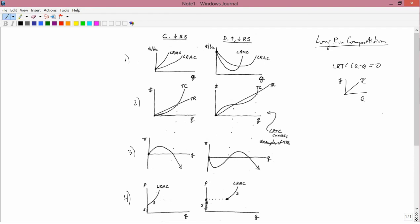You want to see where total revenue exceeds total cost by the greatest amount. Total revenue equals total cost in these points, so you have 0 profit there. Total revenue exceeds total cost by the greatest amount, roughly here, at that level.